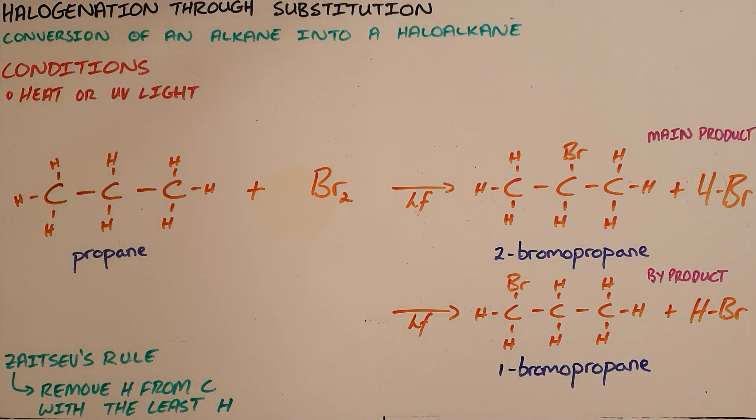Halogenation through substitution is the specific substitution reaction where an alkane is converted into a haloalkane, where the halogens are the elements found in group 17 of the periodic table.